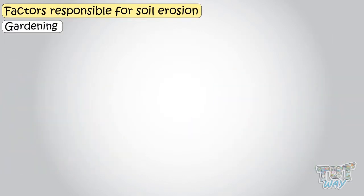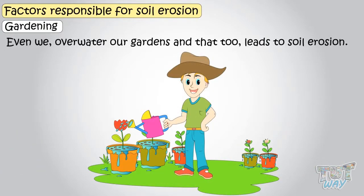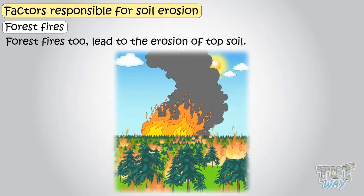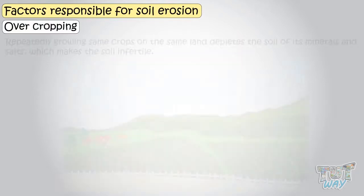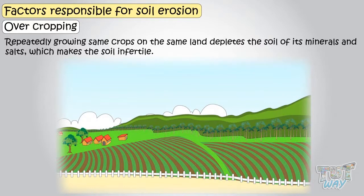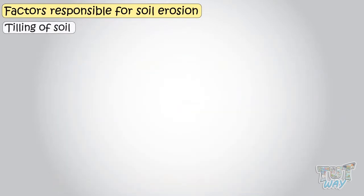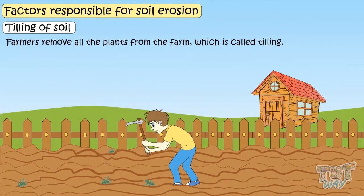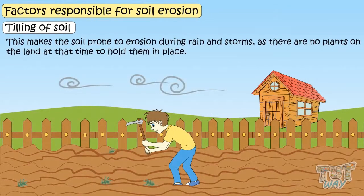Gardening: even overwatering our gardens leads to soil erosion. Forest fires also lead to erosion of topsoil. Overcropping: repeatedly growing the same crops on the same land depletes the soil of its minerals and salts, making the soil infertile. Tilling of soil: a farmer removes all the plants from the farm, which is called tilling, and that makes the soil prone to erosion during rain and storms, as there are no plants to hold soil in place.